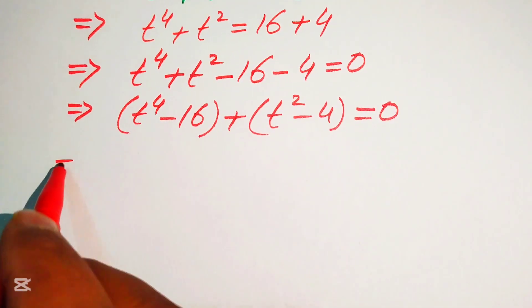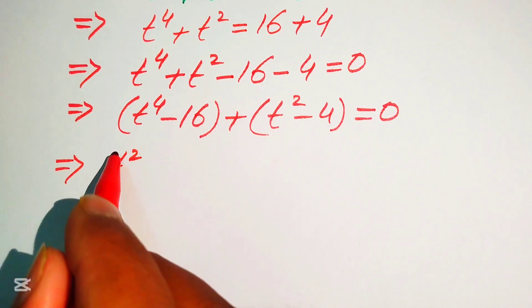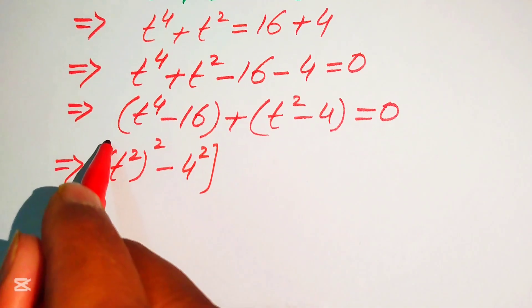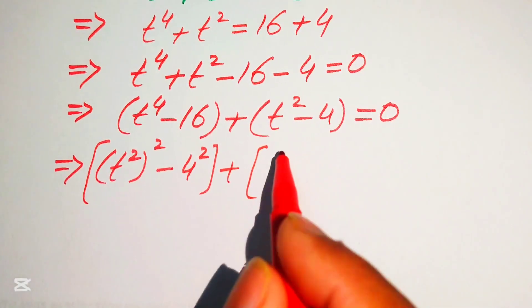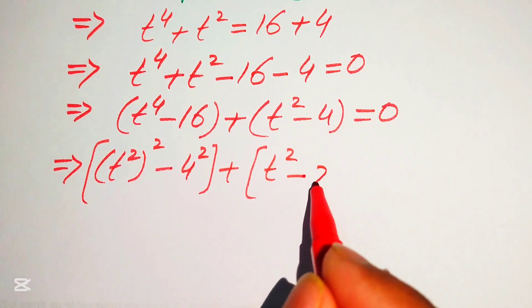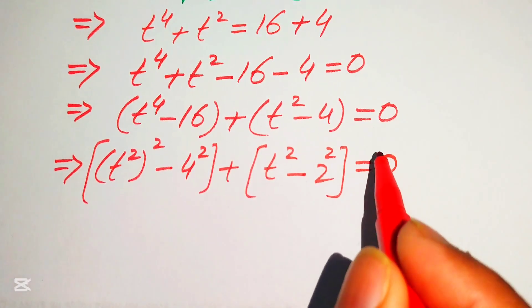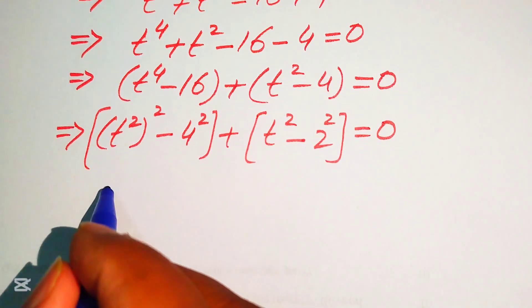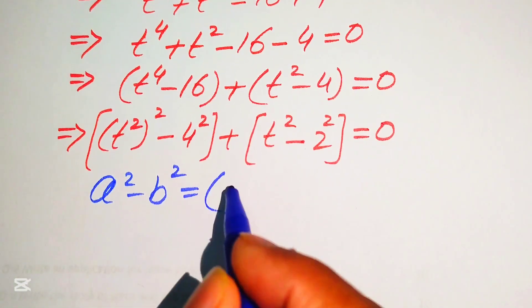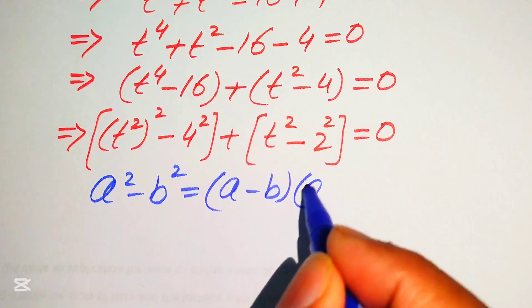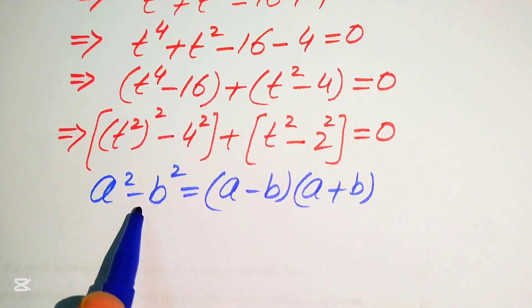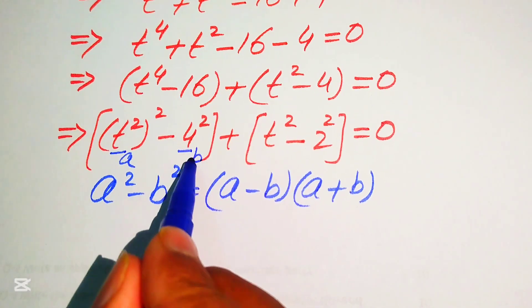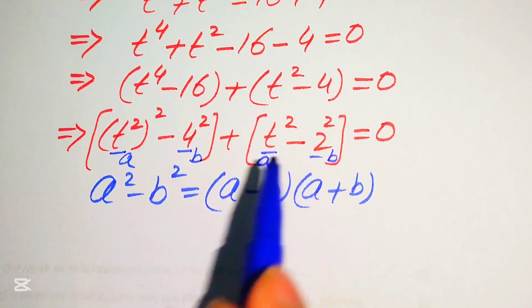We rewrite this equation so that t to the power of 4 is written as t squared, whole squared, and 16 is written as 4 squared. Similarly, t² minus 4 becomes t squared minus 2 squared. We apply the algebraic formula a squared minus b squared equals a minus b times a plus b. Here, for the first factor, a is t squared and b is 4; for the second factor, a is t and b is 2.